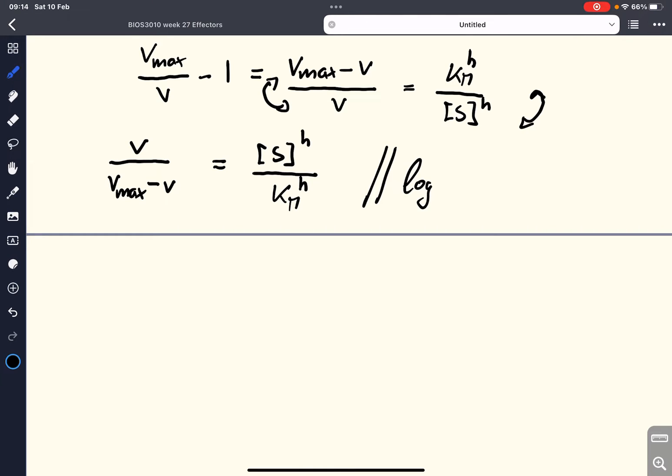Usually, it is the base of 10, but it doesn't matter as long as you are consistent. So, what we get on the left-hand side is log of V over Vmax minus V equals log of S to the power of H over Km to the power of H.